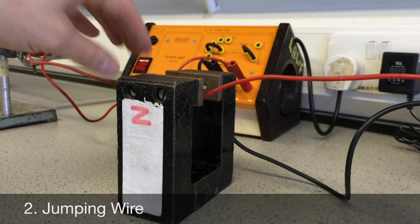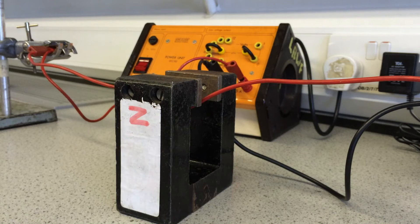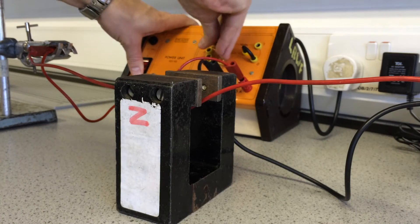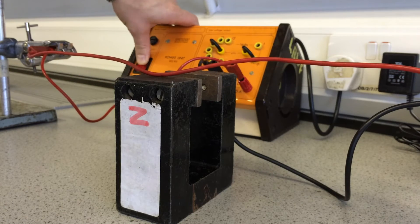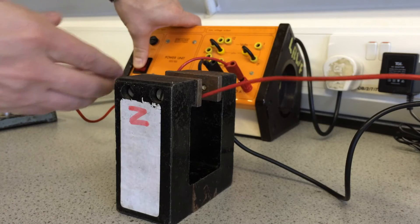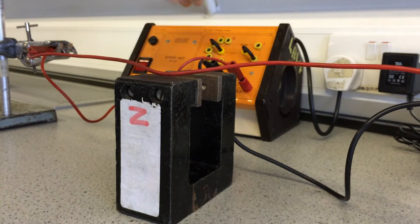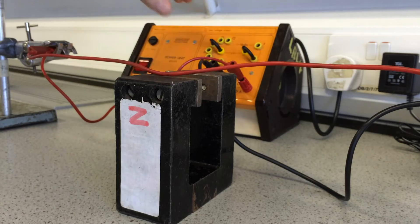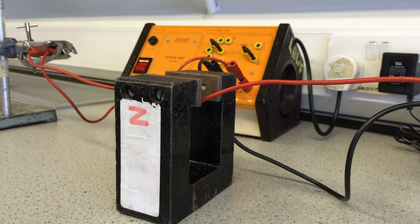I have my current-carrying conductor in this magnetic field, and I'll now put a current through it. Okay, so you can clearly see the magnetic force on the wire. It's a strong magnetic field, and when I put a current through it, it jumps out.